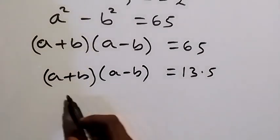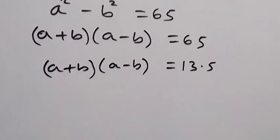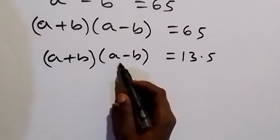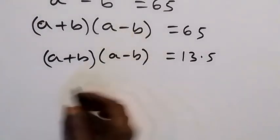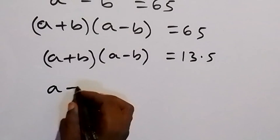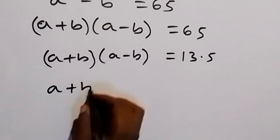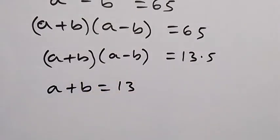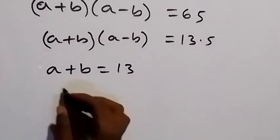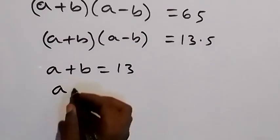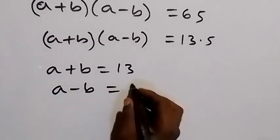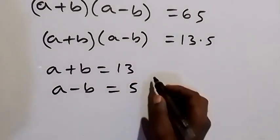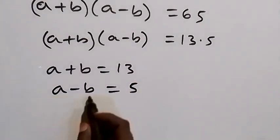From here, a + b is expected to be greater than a − b. Therefore we can say that a + b = 13, because that is greater than 5, and a − b = 5. From these two equations we can eliminate b by adding them together.